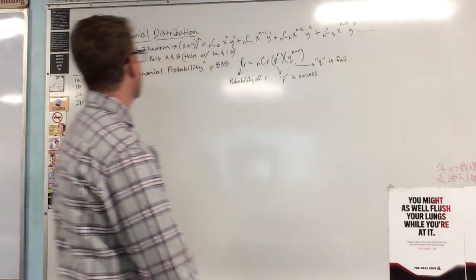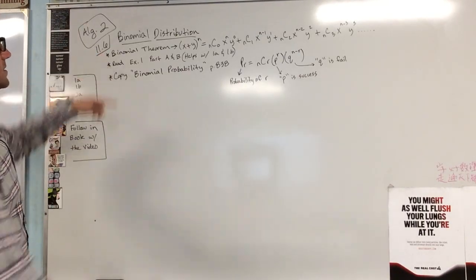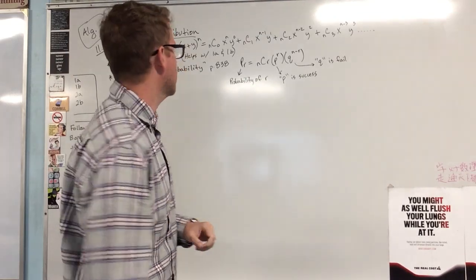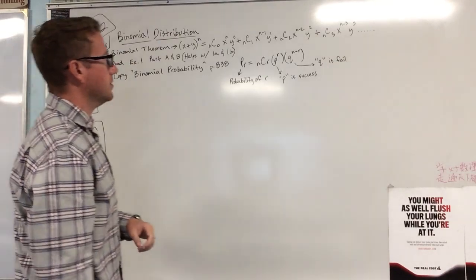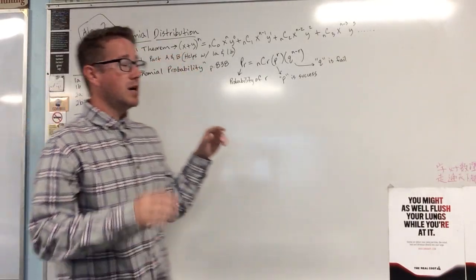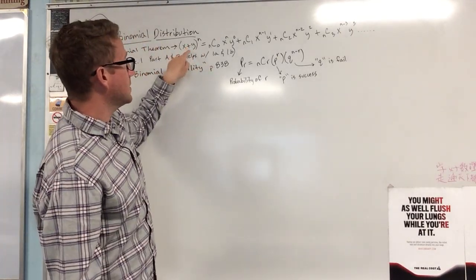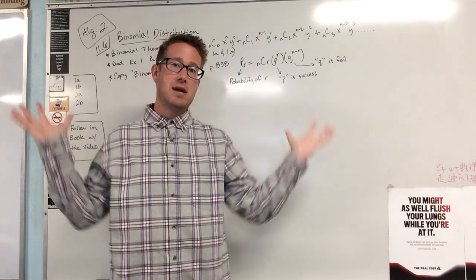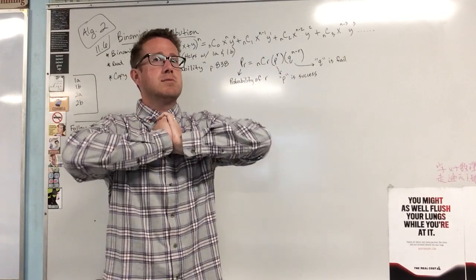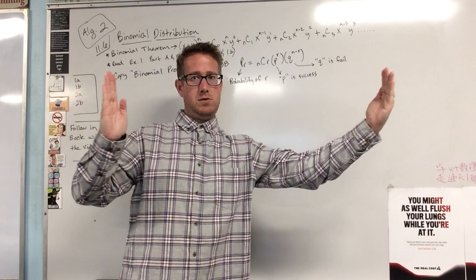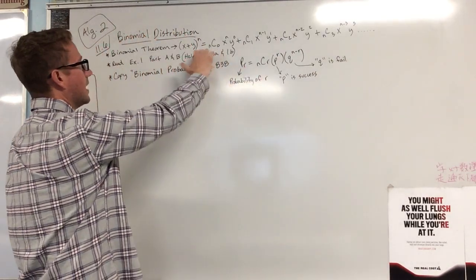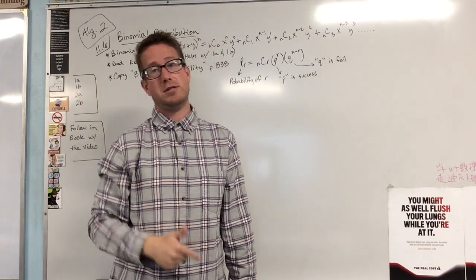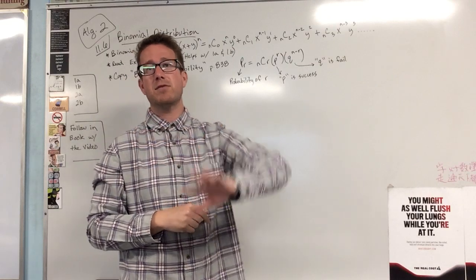Let's jump into it. We are in section six, titled Binomial Distribution. Right off the bat: the Binomial Theorem. Basically, they're going to give you a simple expression in parentheses and say, take this expression and bring it to maybe the fourth or fifth power, and expand it - in other words, take something that starts out nice, neat, and simple and just blow it up into a big answer that takes up the whole screen.